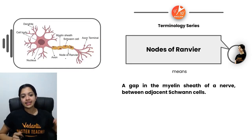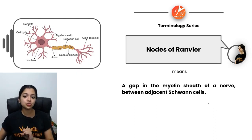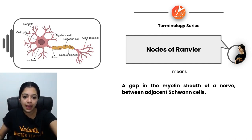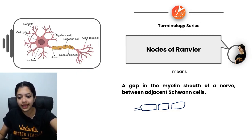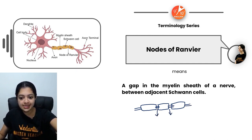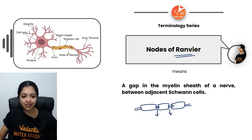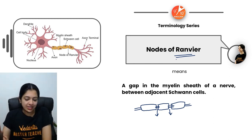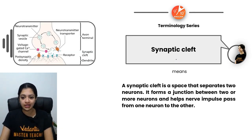Nodes of Ranvier are gaps in the myelin sheath of a nerve between adjacent Schwann cells. So along the axon, sections of myelin sheath are separated by these junction points — those junctions are called nodes of Ranvier (spelled R-A-N-V-I-E-R). A helpful memory trick: think of the Bollywood actor Ranveer Singh, though the spelling differs.